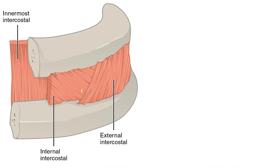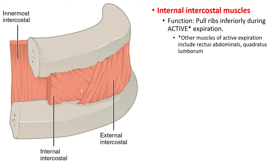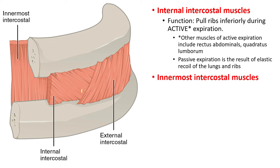Now let's talk about the internal intercostal muscles. The function of the internal intercostal muscles is to pull the ribs inferiorly during active expiration. Other muscles involved in active expiration include the rectus abdominalis and quadratus laborum. Passive expiration is the result of elastic recoil of the lungs and ribs.